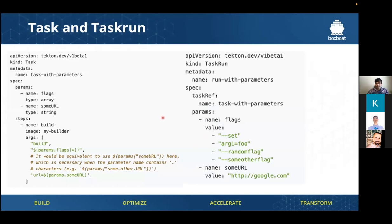Let's talk about what a task and a task run are. A task is a building block of a pipeline — these are CRD objects that exist in Kubernetes, and you can interact with them using kubectl, or TKN, or the GUI interface that comes with Tekton. Each task can have multiple different steps. In this case, the specific task has one step which uses a specific image, takes some arguments, and accomplishes some work. A parameter lets you pass in different values into these tasks, making tasks very modular and reusable.